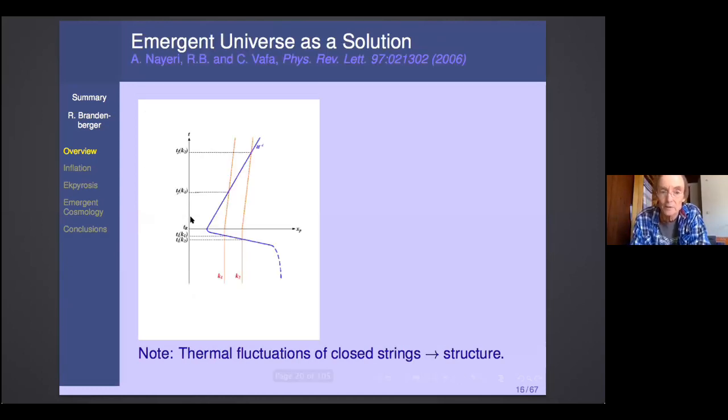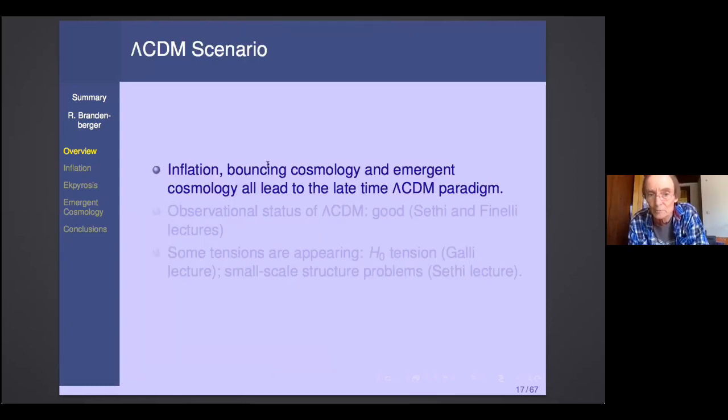A scenario which was not addressed so far in this school slash workshop is the emergent scenario, where you assume that there is an early phase where the universe is static, or maybe it's an early phase where you don't even have space-time. And then you have a phase transition to the usual standard Big Bang cosmological evolution. So the horizon is also infinite. The Hubble radius is therefore much smaller than the horizon. The bottom line is that there is more than one scenario of early universe cosmology, which is consistent with the basic observations. In fact, inflation, bouncing cosmologies and emergent cosmologies all lead to the late time Lambda CDM paradigm. So it is false to say that Lambda CDM includes inflation.